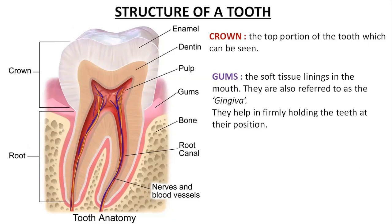Healthy gums keep the teeth tightly fixed at a particular position and they cover the entire root of the tooth. For example, in humans, the teeth are strongly attached or strongly rooted in the sockets formed in the gums.